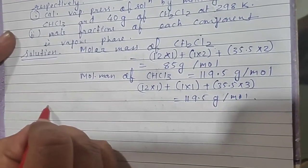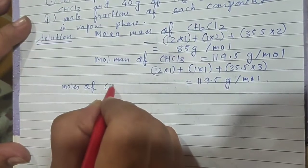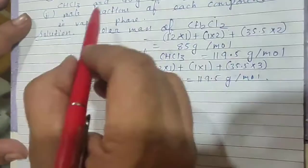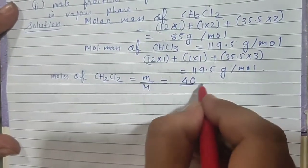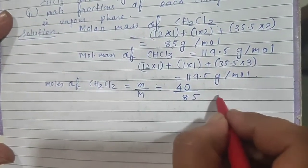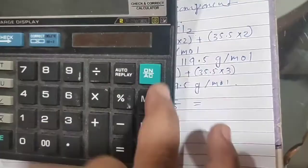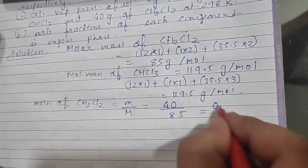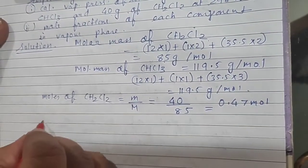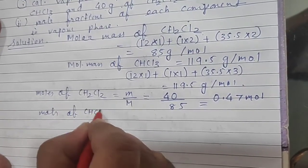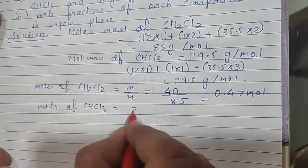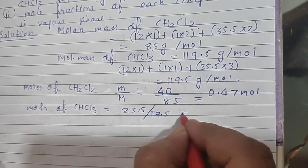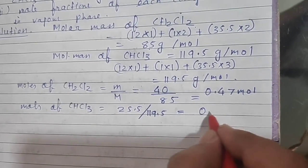Next we calculate the moles. Moles of CH2Cl2 = mass/molar mass = 40/85 = 0.470 mol. Similarly, moles of CHCl3 = 25.5/119.5 = 0.213 mol.